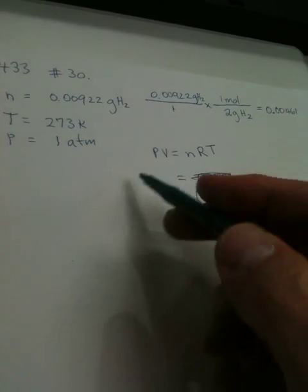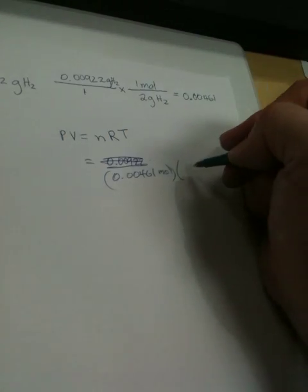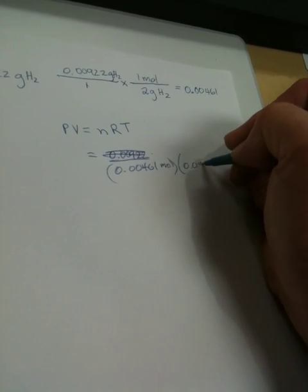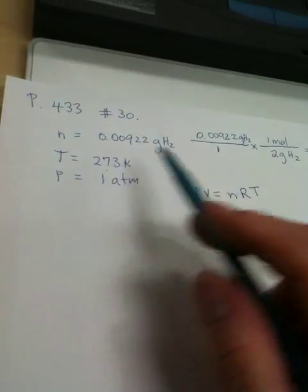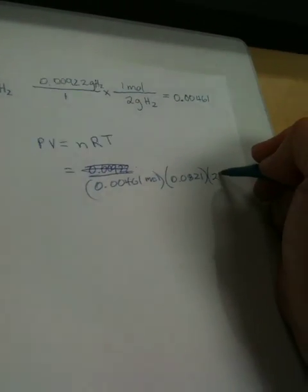And we're going to multiply that by R, which is 0.0821, and then we're going to have the temperature from over here, which is 273 Kelvin.